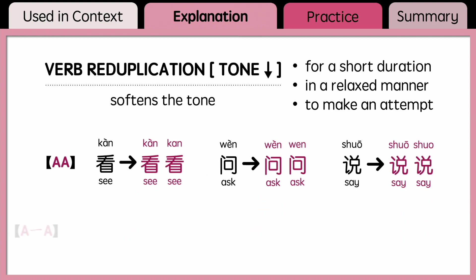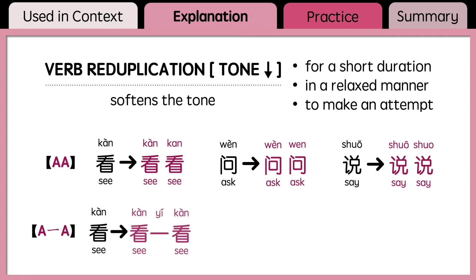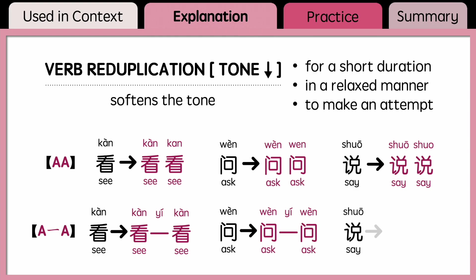The A一A pattern adds 一 in between the two verbs. So instead of 看看, you can also say 看一看. Instead of 问问, you can also say 问一问. And instead of 说说, you can also say 说一说.